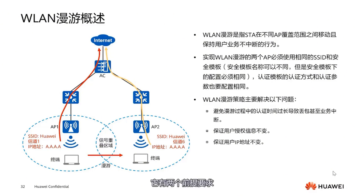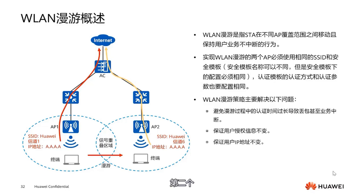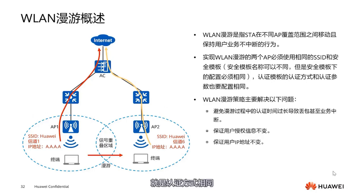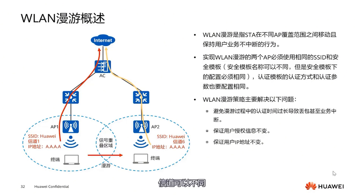How is roaming achieved? It has two prerequisites. First, the SSID must be exactly the same, and the signal strength in both areas must be the same. Second, the security template must be identical. For instance, if AP1 is configured with WPA, then AP2 must also use WPA, and the password must be the same — a different password would also cause a disconnection. That is, the authentication method must be the same, as well as the authentication parameters. The password authentication method and the SSID must be identical. The channels can be different.